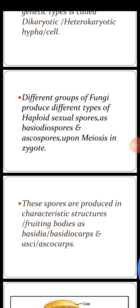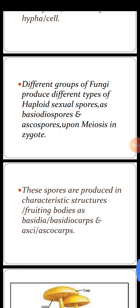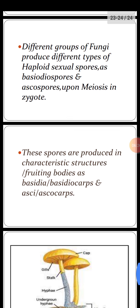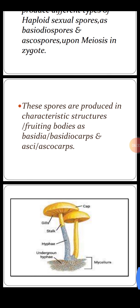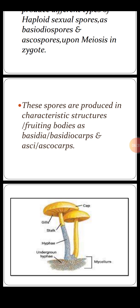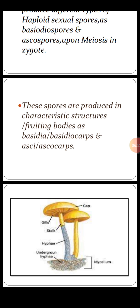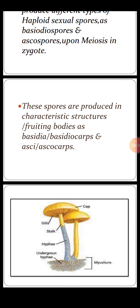Different groups of fungi produce different types of haploid sexual spores — for example, basidiospores and ascospores — by meiosis in the zygote. These spores are produced in characteristic structures or fruiting bodies. Basidiospores are produced in a special structure called basidia, and fruiting bodies are basidiocarps. Ascomycetes produce special structures called asci, and their fruiting bodies are called ascocarps. Finally, a picture of fungi shows their cap, stalk, hyphae, and the body of the fungus, which is the mycelium.